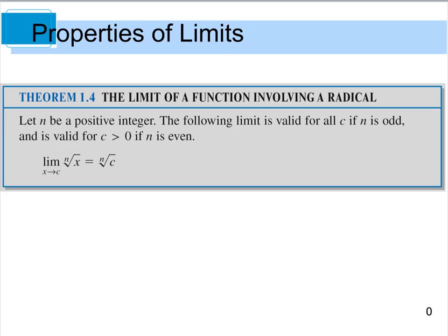Theorem 1.4 deals with the limit of a function involving radical functions. Let N be a positive integer: the limit is valid for all C if N is odd, and valid for C greater than 0 if N is even. Remember, if you're taking an even root, you can't take a square root or fourth root of a negative number — so even radicals require the argument to be greater than 0. But you can take an odd root, like the third root of negative 8.